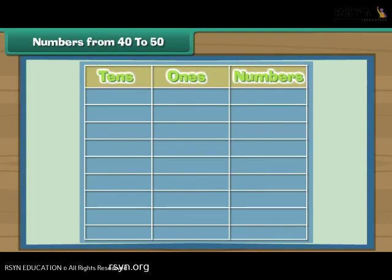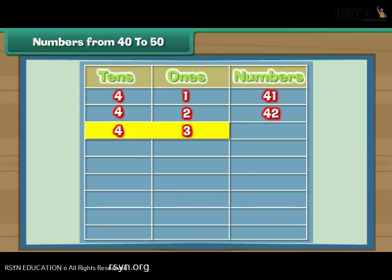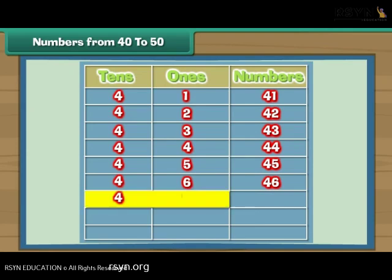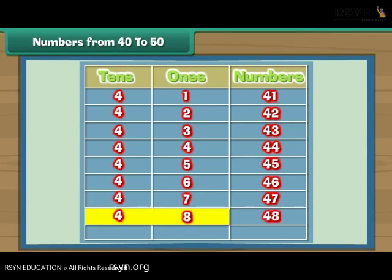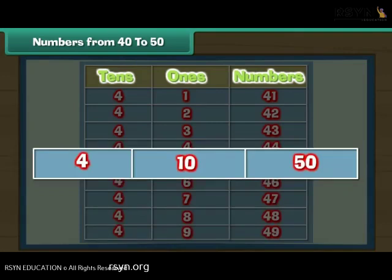Let us now complete this table. Four tens and one give 41. Four tens and two give 42. Four tens and three give 43. Four tens and four give 44. Four tens and five is 45. Four tens and six is 46. Four tens and seven is 47. Four tens and eight is 48. Four tens and nine is 49. Four tens and ten give five tens — that is 50.